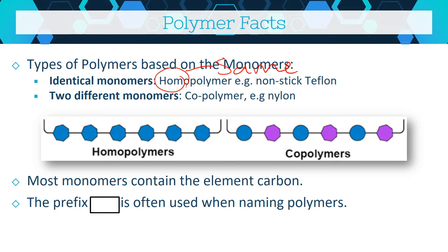Most monomers contain the element carbon, so by default polymers also contain carbon. The core of a polymer is a carbon chain, and it's the groups coming off the carbons that give the polymer its different properties. We tend to put 'poly' in front of whatever the monomer term is to get the polymer's name. So if you have vinyl acetate as your monomer, you get polyvinyl acetate, or PVA. Some pretty common compounds are actually polymers and we don't even realize we're using their polymer names.